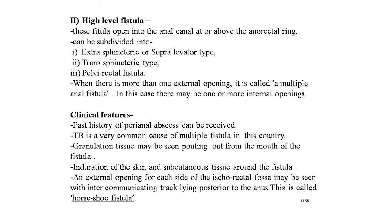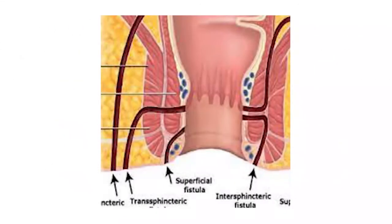Clinical features of fistula in ano: past history of perianal abscesses. Tuberculosis is a very common cause of multiple fistula in our country. Granulation tissue may be seen pouting out from the mouth of the fistula. Induration of the skin and submucous tissues around the fistula. External openings on each side of the ischio-rectal fossa with intercommunicating tract lying posterior to the anus is called horseshoe fistula. Here the types of fistula are shown: enteric fistula, transphincteric, superficial, intersphincteric, and suprasphincteric.